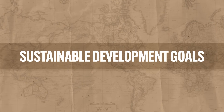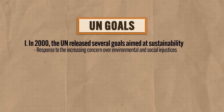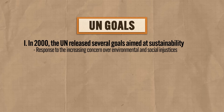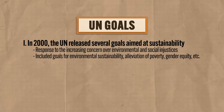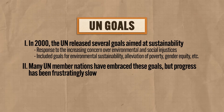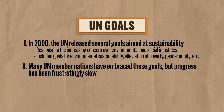The second effort aimed at sustainability is much grander in scale because it was created by the United Nations. In the year 2000, the UN responded to the increasing concern over environmental and social injustices that accompanied our new economic situation by releasing several goals aimed at sustainability. These included goals for environmental sustainability, alleviation of poverty, and gender equity, among many others. These goals re-envisioned development from being a purely economic reality to more of a holistic approach that considered all dimensions of human flourishing. Many UN member nations have embraced these goals, but the progress has been frustratingly slow.